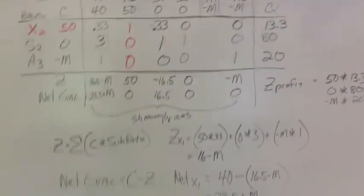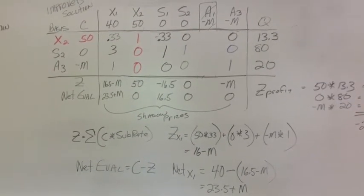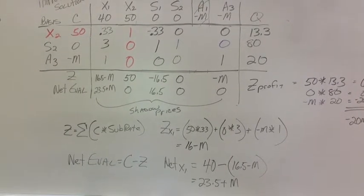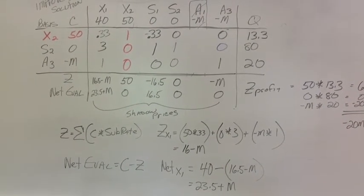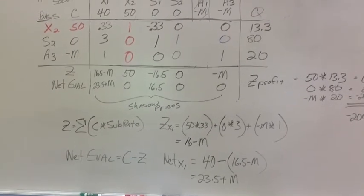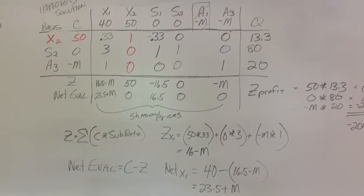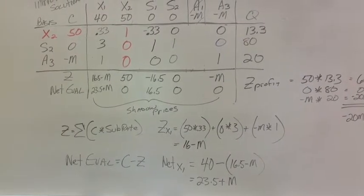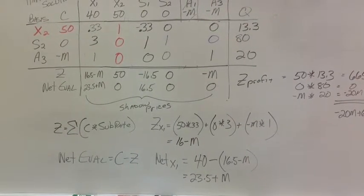So I've gone and I've put the a3 values in. And I've gone ahead and calculated my z. Again, z is the summation of the c in the basis times the subrate of the variable. So for example, z of x1 is the 50 times 0.3 times 1 third, 0 times 3, negative m times 1. So that gives me, it actually comes out to 16.459, something like that. I rounded it off and called it 16.5. So it's 16.5 minus m. To calculate my net evaluation, it's the constant from the variable itself. So that's 40. So I have, for x1, it would be 40. So 40 minus 16.5 minus m. Again, a negative m plus a negative m is a positive m. So it comes out to 23.5 plus m.